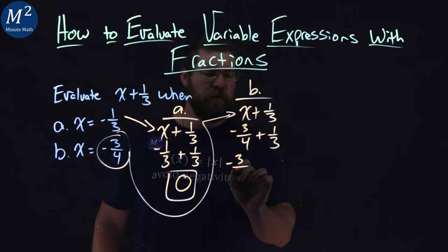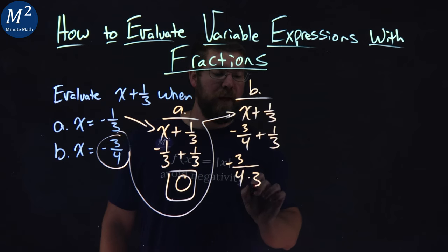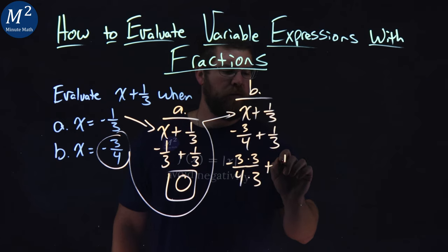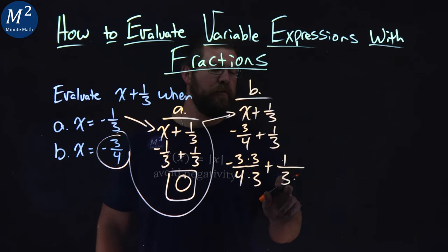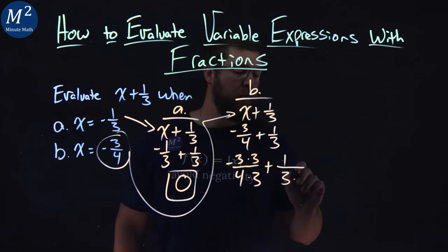So we take the negative 3/4, and if I multiply that 4 by 3, I get 12. So I take the numerator and multiply it by 3 as well, plus 1/3. To make 3 a 12, we multiply that by 4. Multiply the numerator by 4.